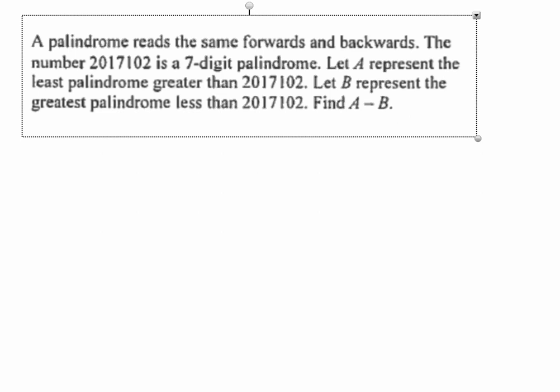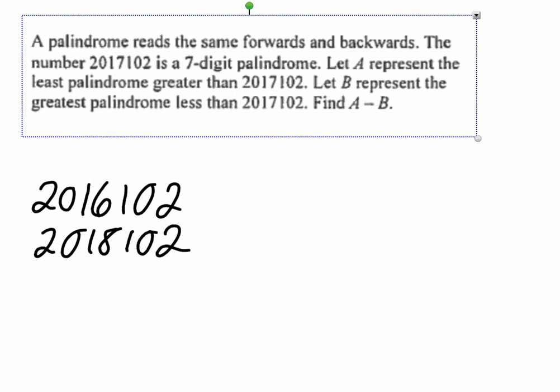What the next palindrome bigger than this number is and what the next palindrome smaller than this number is. Most of you were able to figure out that the only thing that changed was this became 16 or it became 18. Then all you had to do was find the difference between these numbers, which was 2,000. So most of you were able to get this question quite easily, realizing that the next lowest would have a 6 in it and the next highest would have an 8 in it.